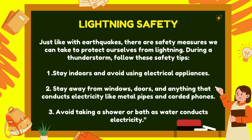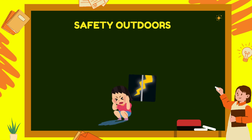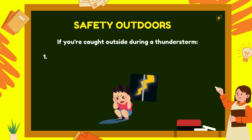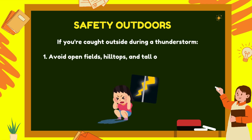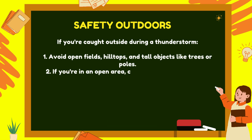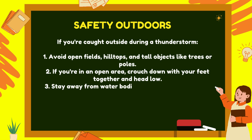Avoid taking a shower or bath as water conducts electricity. If you're caught outside during a thunderstorm, avoid open fields, hilltops, and tall objects like trees or poles. If you're in an open area, crouch down with your feet together and head low. Stay away from water bodies like lakes and swimming pools.